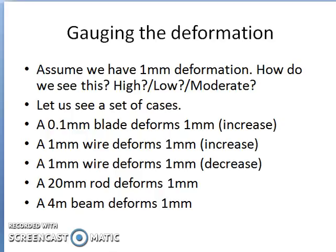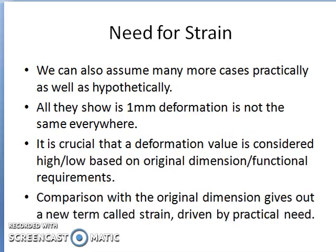We also have a very funny case: a 1mm wire deforms 1mm in decrease, where it is not going to exist at all. Then a 20mm rod deforms 1mm, and in yet another case, a 4m beam deforms 1mm. All these cases show that 1mm deformation is not the same everywhere.